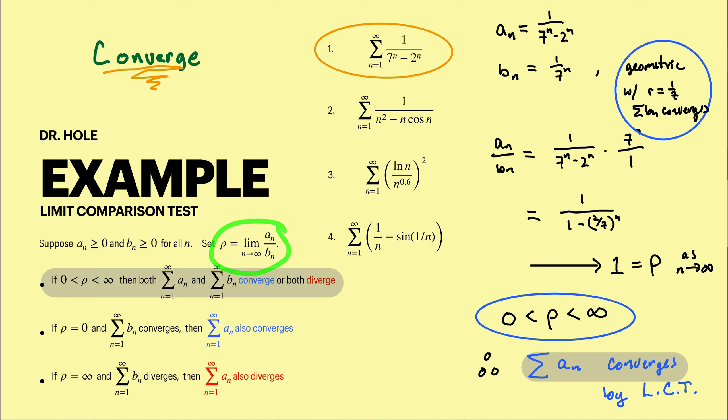To do the limit comparison test we need to obtain rho. Rho is the limit of the quotient a_n over b_n. Looking at a_n dividing by b_n is the same thing as multiplying by the reciprocal of b sub n. A quick way to clean this up is to divide every term in the top and every term in the bottom by seven to the n. So seven to the n goes to one, seven to the n goes to one, two to the n goes to two over seven raised to the n. Two over seven raised to larger and larger integer quantity will tend to zero.